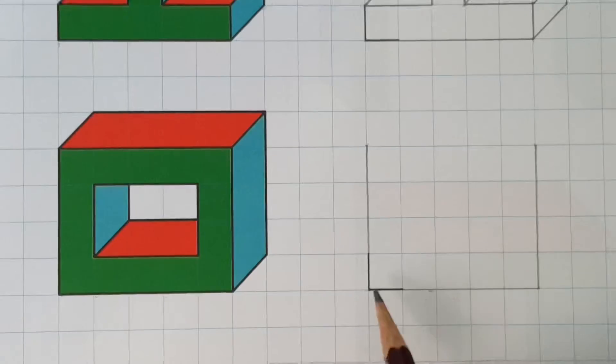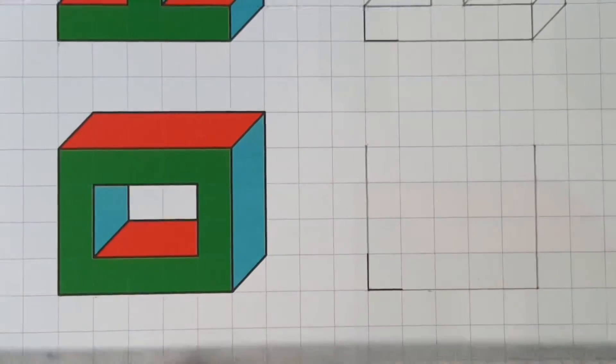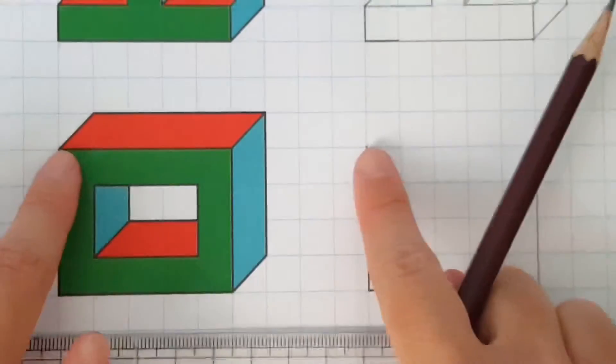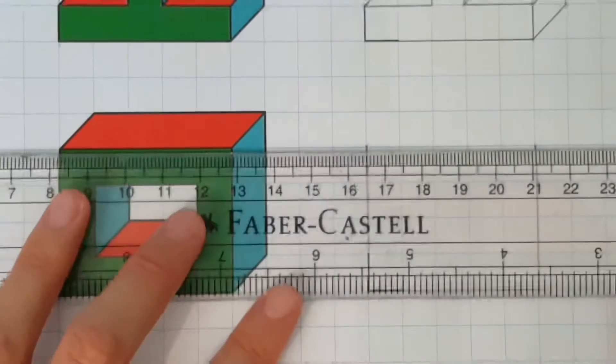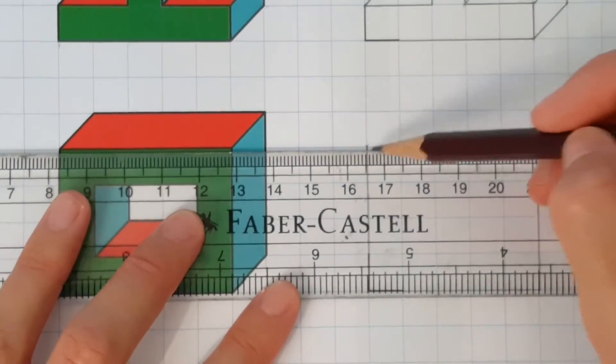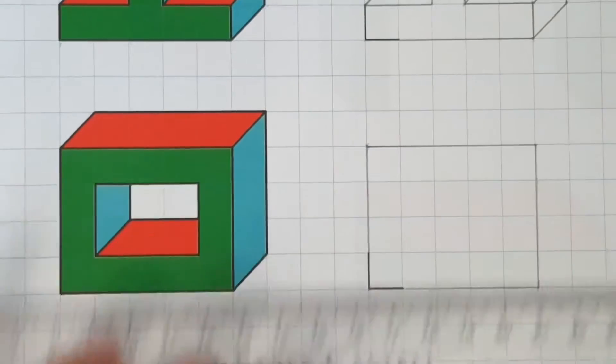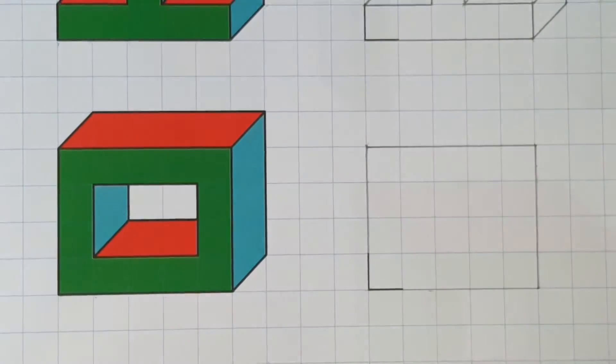For now, only focus on drawing the outermost rectangle. Now let's join these two lines right here to have our front view of the outermost rectangle.